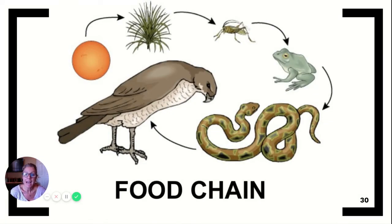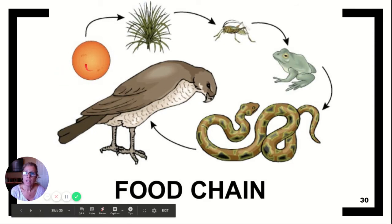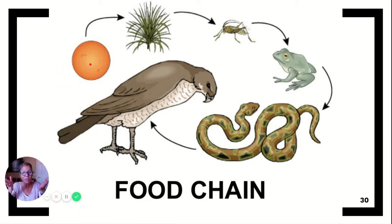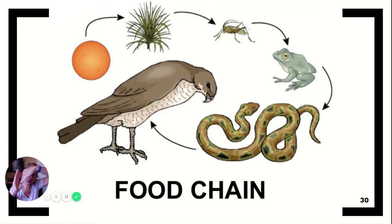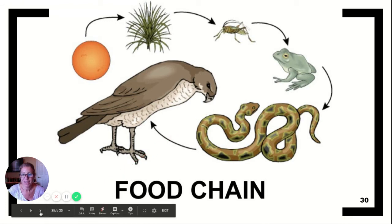Here you're looking at a food chain. That orange circle is the sun — not drawn to scale, otherwise it would be terrifying. One thing to notice: the way the arrows go in a food chain, the food is going to the one consuming it — think of it like the arrow points to the mouth. A food chain is a single path of energy flow.